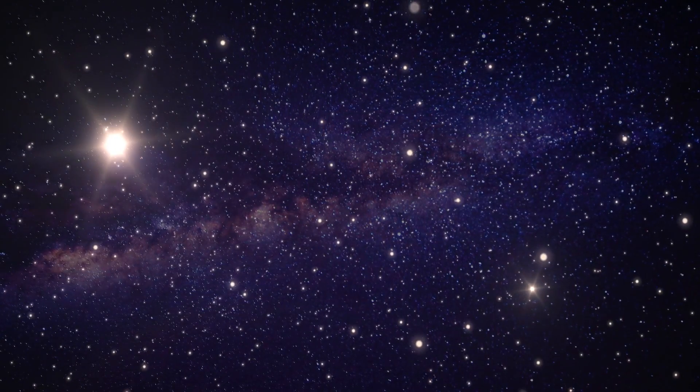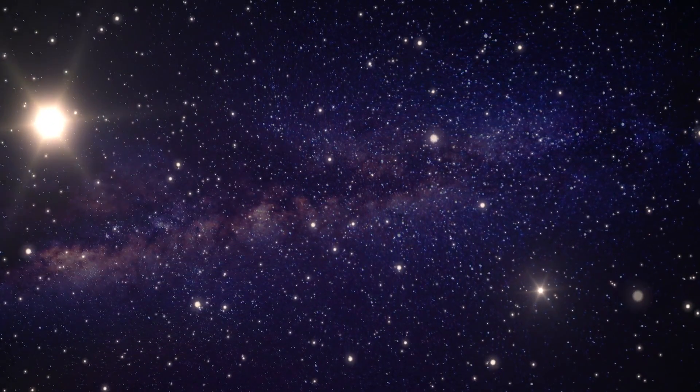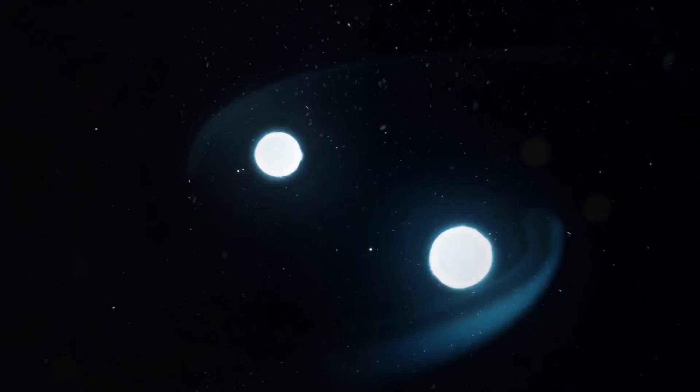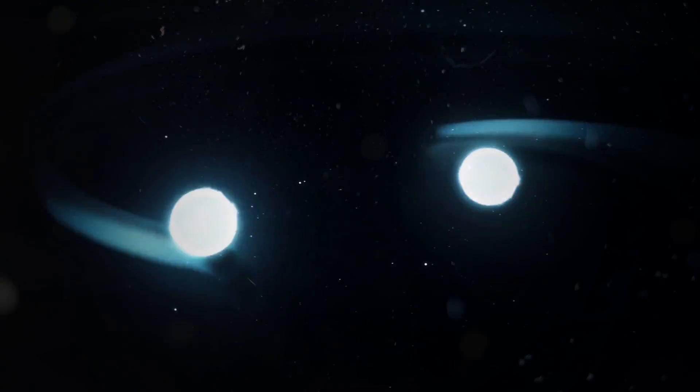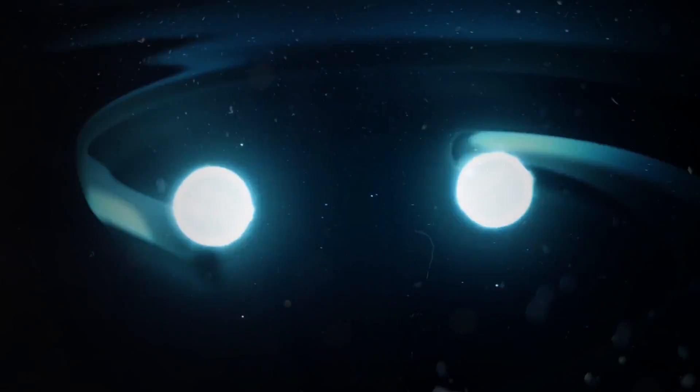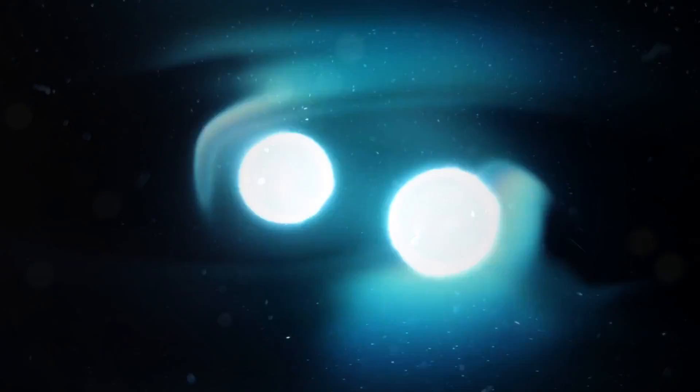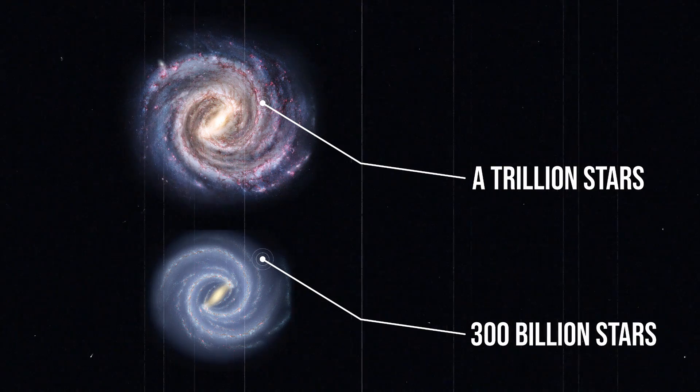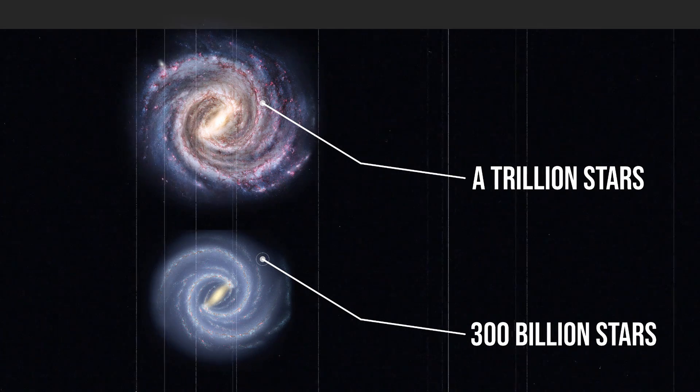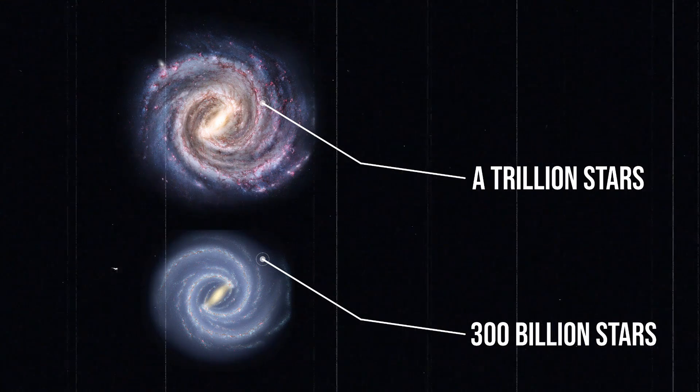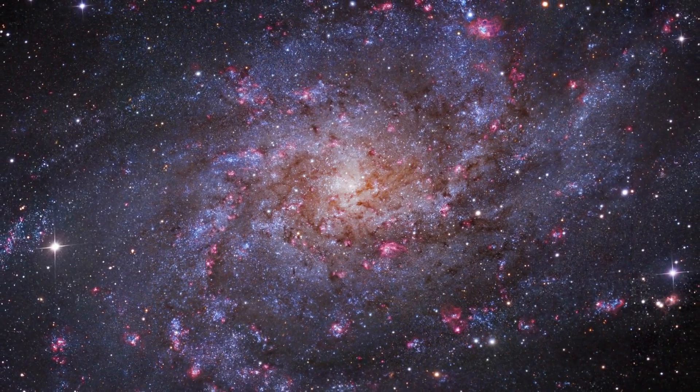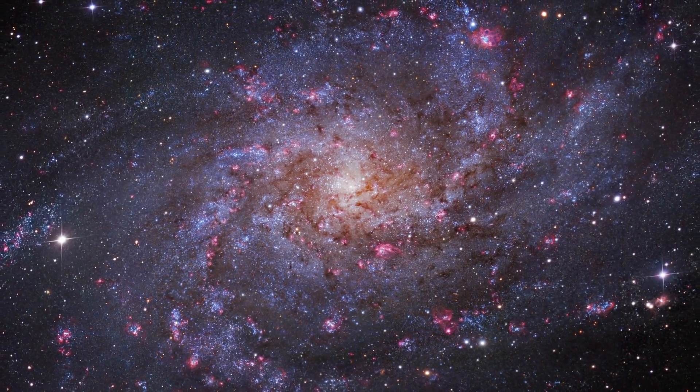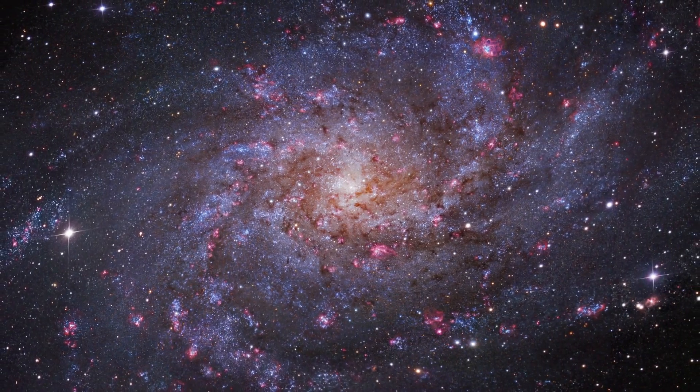As a result, when galaxies merge, the stars themselves seldom collide. However, the merger will have an impact on stars both in the Andromeda galaxy and our Milky Way. A trillion stars make up the Andromeda galaxy. There are approximately 300 billion stars in the Milky Way. Both galaxy stars will be flung into new orbits around the newly combined galactic core.